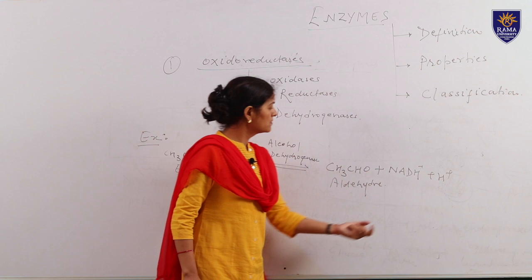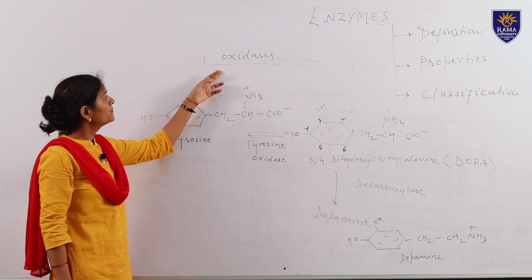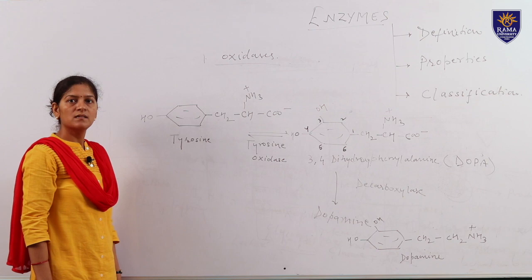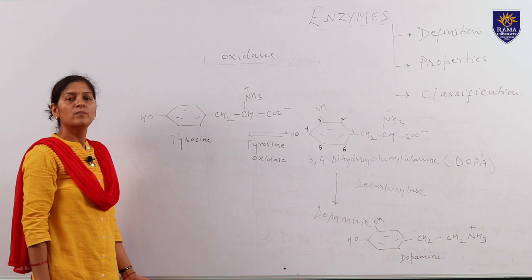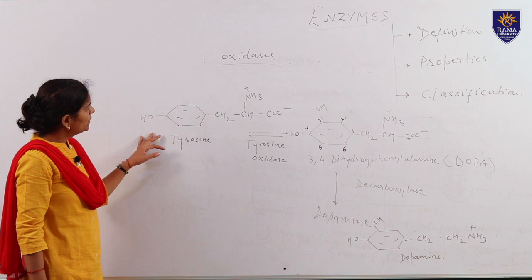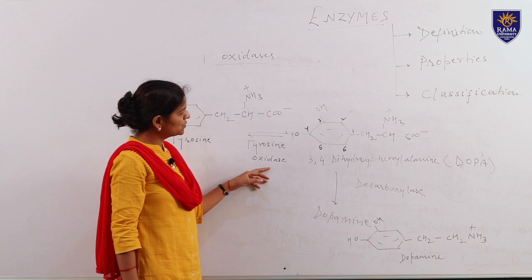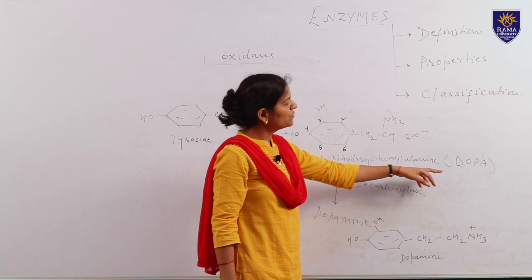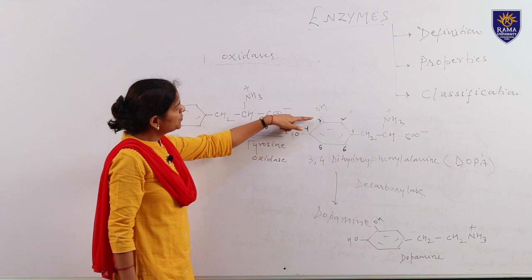Oxidases are the first subclass of oxidoreductases. Oxidase enzymes participate in oxidation reactions. These reactions involve the addition of oxygen, removal of hydrogen, or loss of electrons. I have given an example of tyrosine, in which tyrosine undergoes oxidation to give the product 3,4-dihydroxyphenylalanine — in short, called DOPA. In this reaction, an extra hydroxyl group is introduced at the third position due to the presence of the oxidase enzyme.